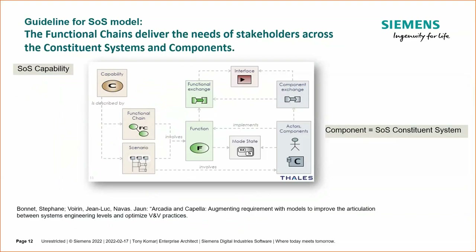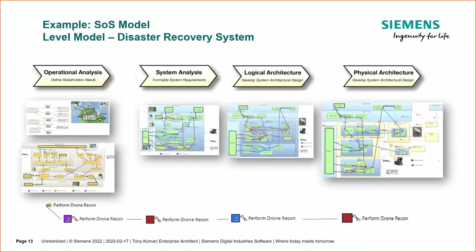Another important guideline: functional chains deliver the needs of the stakeholders across the constituent systems and components. This builds on the work of Stéphane Bonnet, Jean-Luc, and Juan Neves. These are standard functional chain capabilities, but the difference is that the system of systems capability is the capability being discussed, and the components are really the constituent systems. I'm going to walk through an example going from operational analysis to system analysis to logical architecture to show how that functional chain connection works.